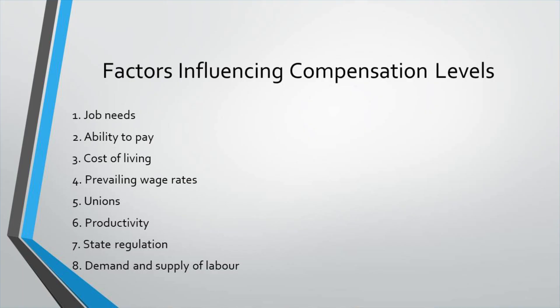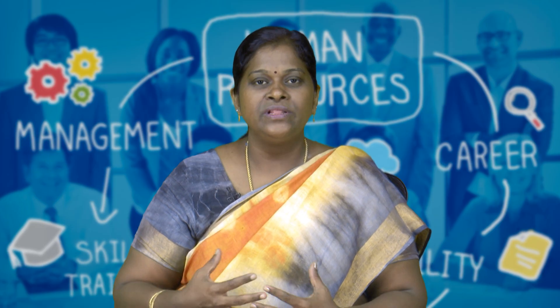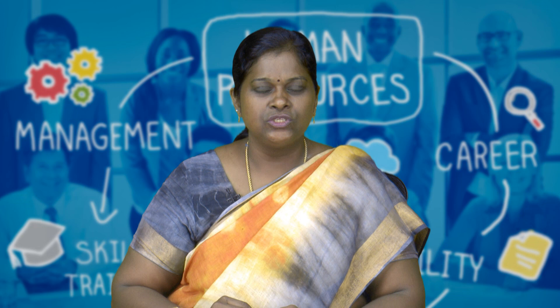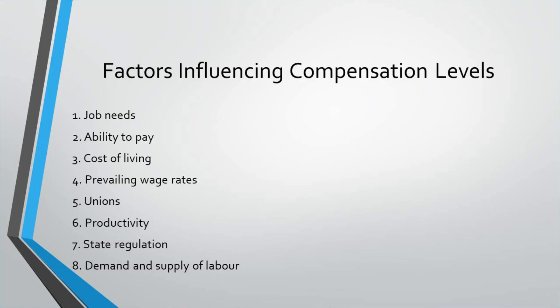Factors influencing compensation level include: the job requirements and type of labor involved; the employer's ability to pay — a cottage industry can pay only limited amounts; cost of living — higher in metropolitan cities like Chennai, lower in rural areas; prevailing wage rates in the area; the strength of trade unions; productivity — more production means more profit and better pay; government regulations; and demand and supply for labor — scarce skills like IT engineering command higher pay.